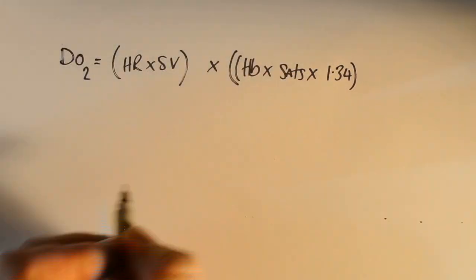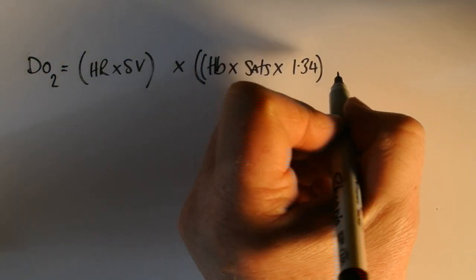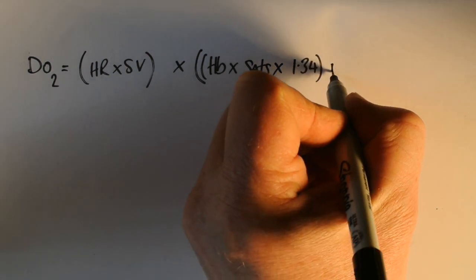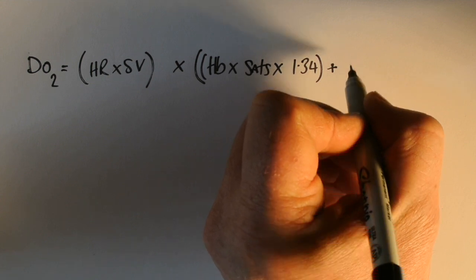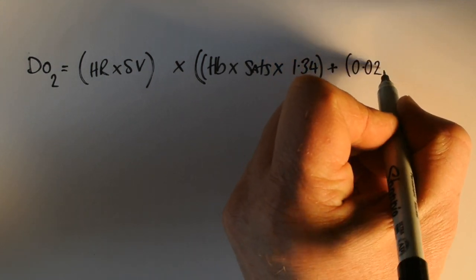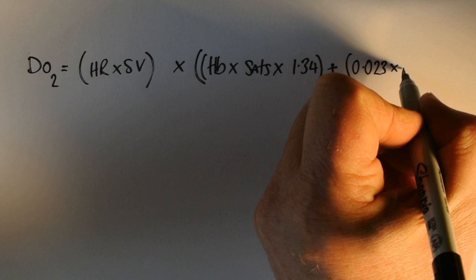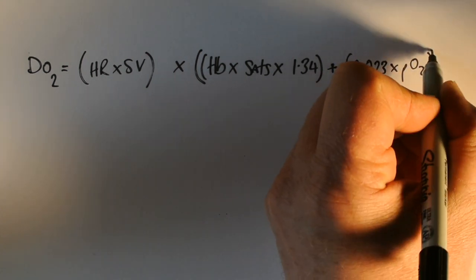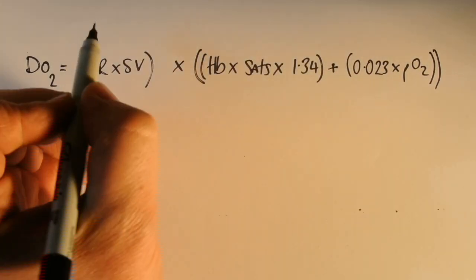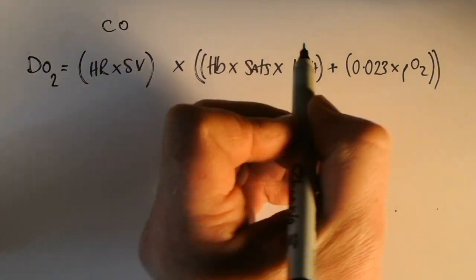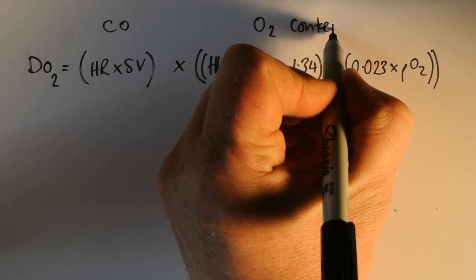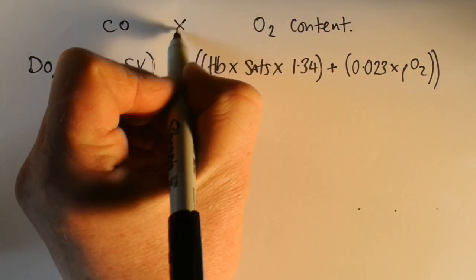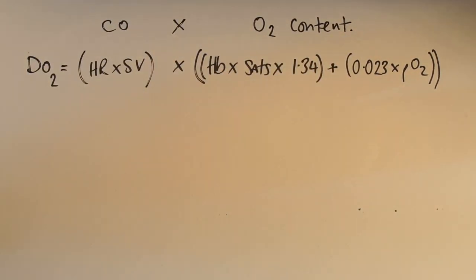Added to that is going to be our dissolved oxygen which is 0.023 times by our pO2. With our previous respiratory physiology, we know that our pO2 can be calculated using the alveolar gas equation. We're going to write at the top here cardiac output and O2 content so we can keep ourselves on track.